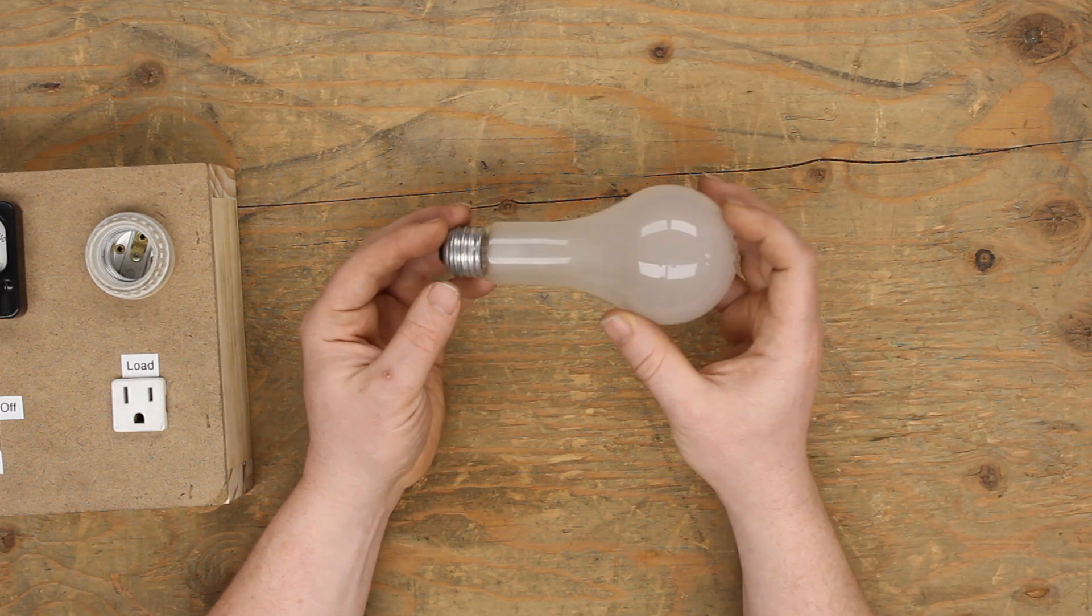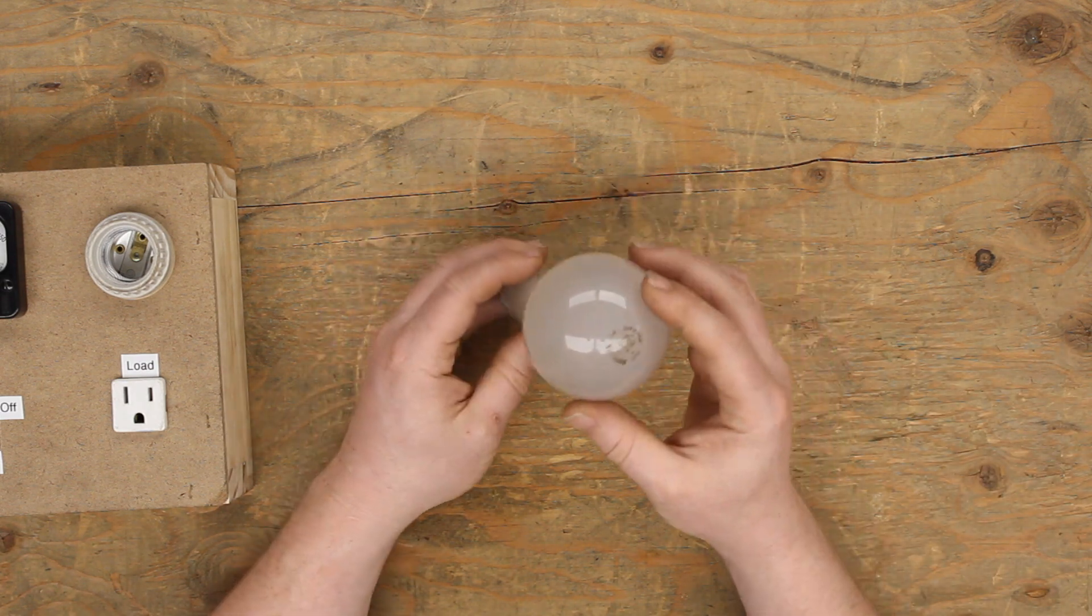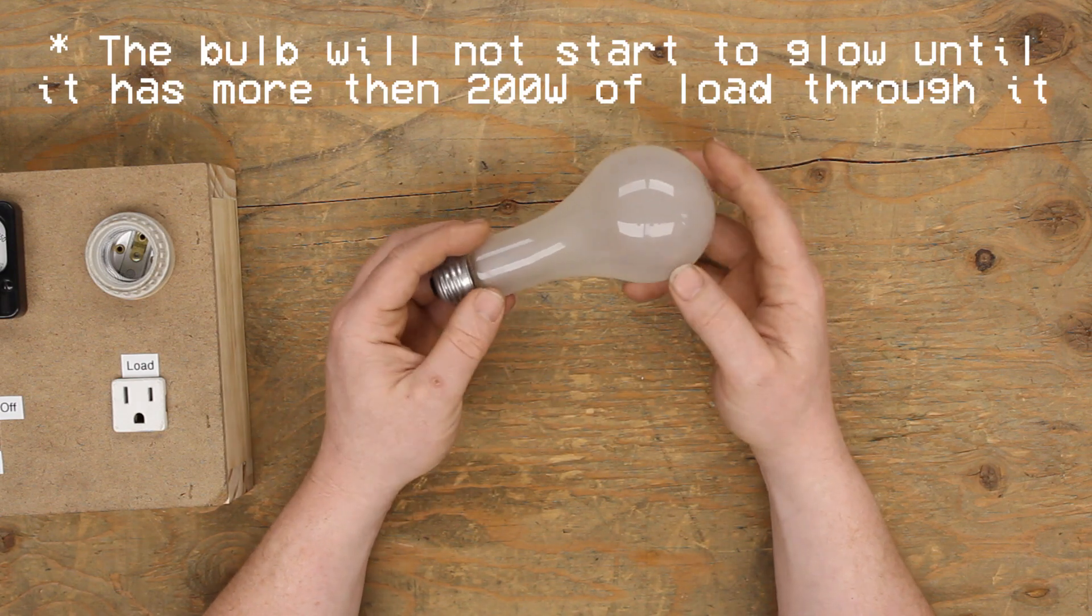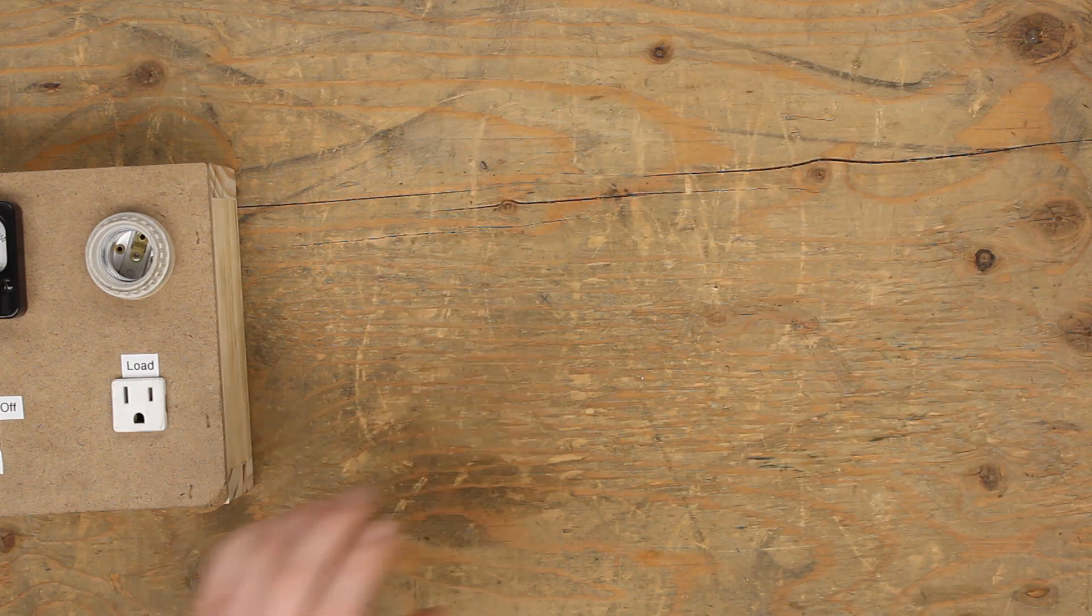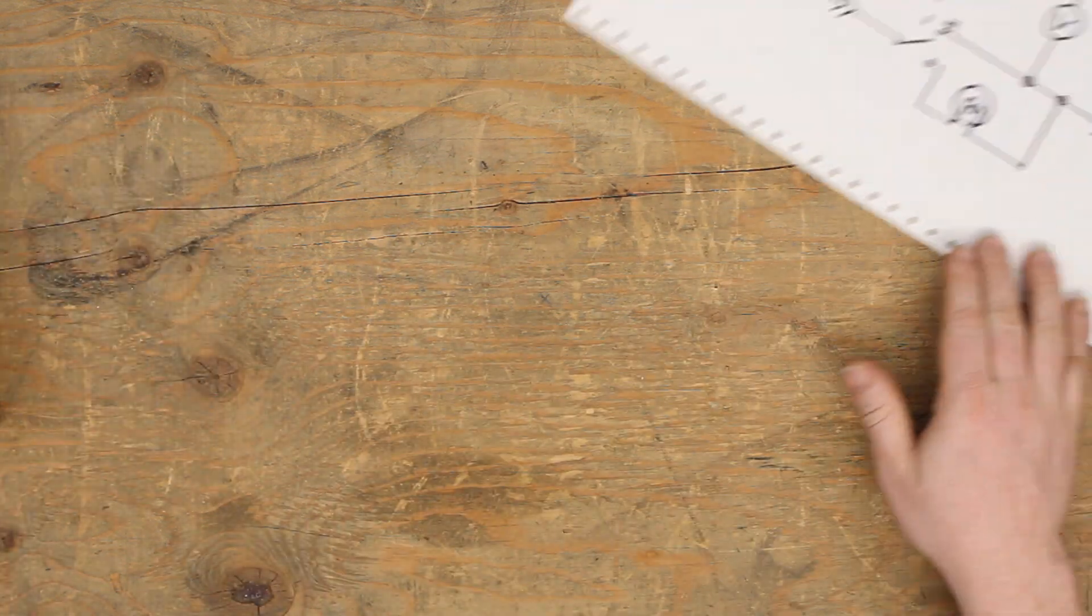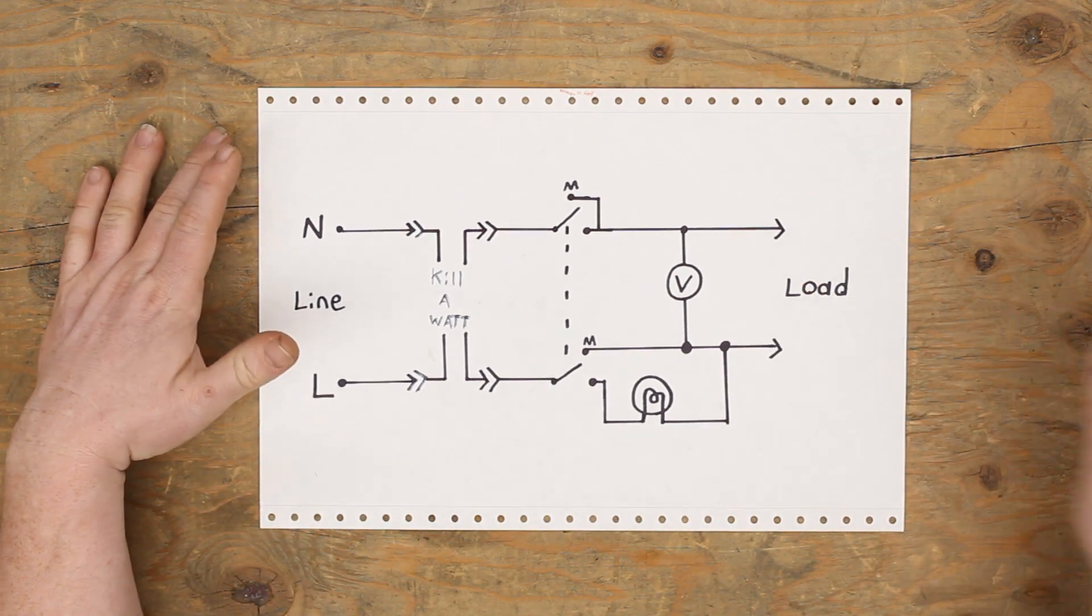In comparison, I have this bulb here, which is a 200 watt bulb, so this here can dissipate 200 watts of load. The way that it works in my dim bulb tester, I've actually drawn up a schematic here.